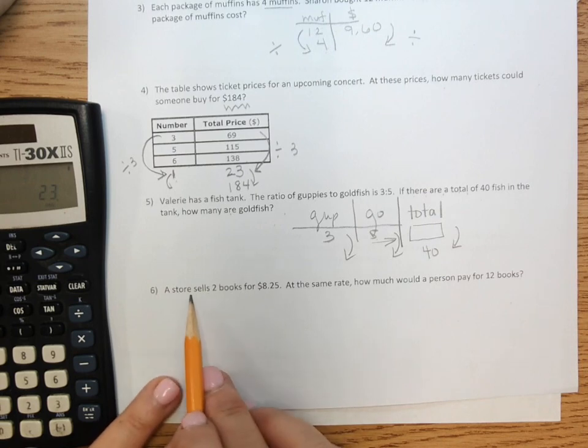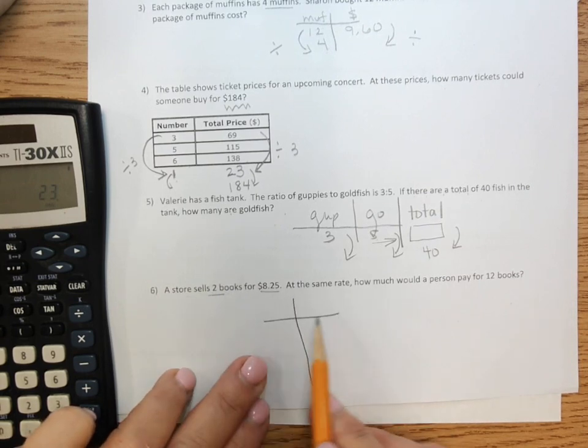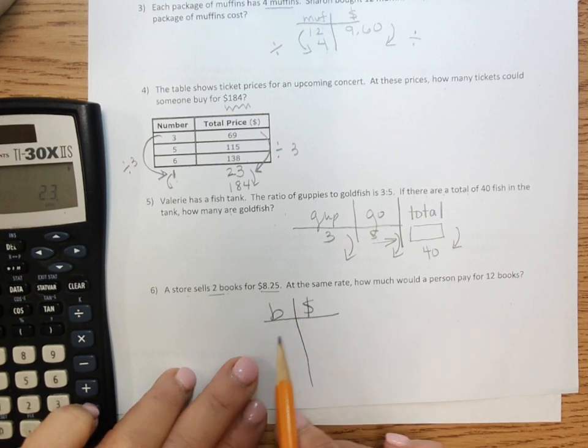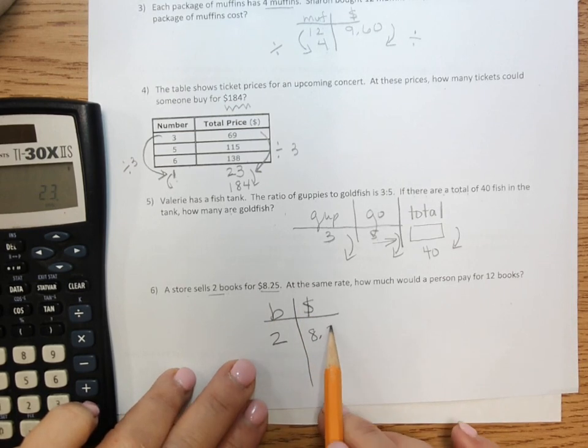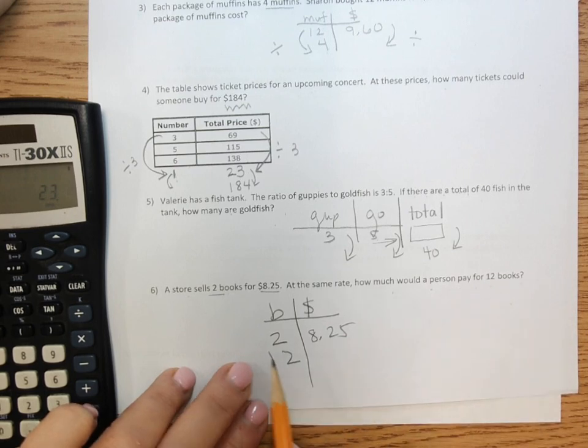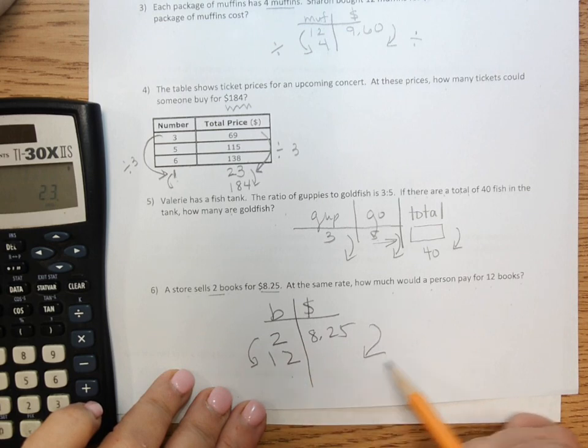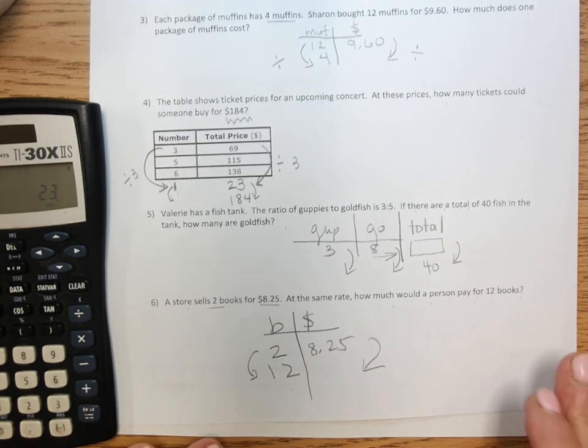Finally, a store sells two books for eight and a quarter. How much would a person pay for 12? Figure out what your helper is. Find out what your answer is. Thank you for your attention.